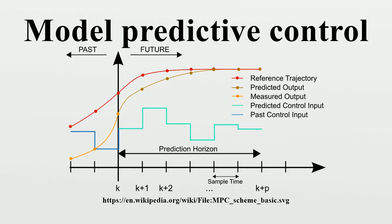The prediction horizon keeps being shifted forward and for this reason MPC is also called receding horizon control. Although this approach is not optimal, in practice it has given very good results.